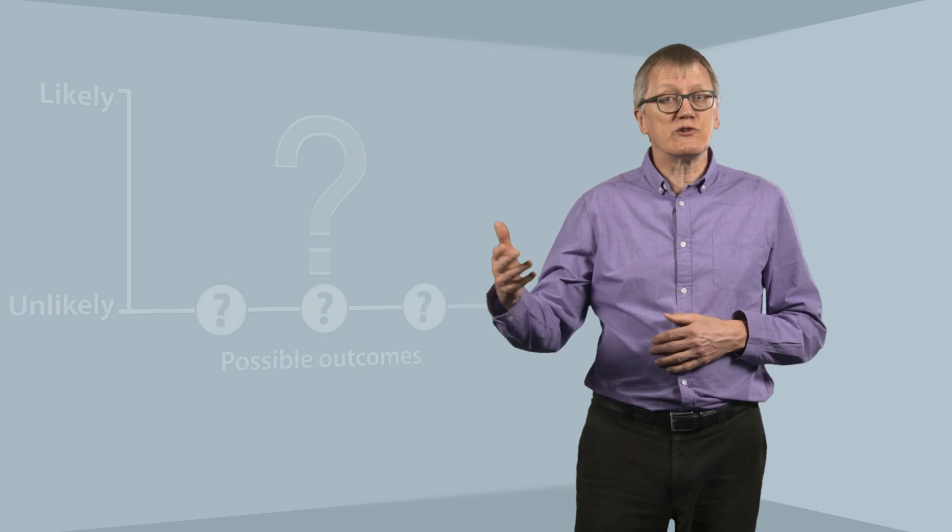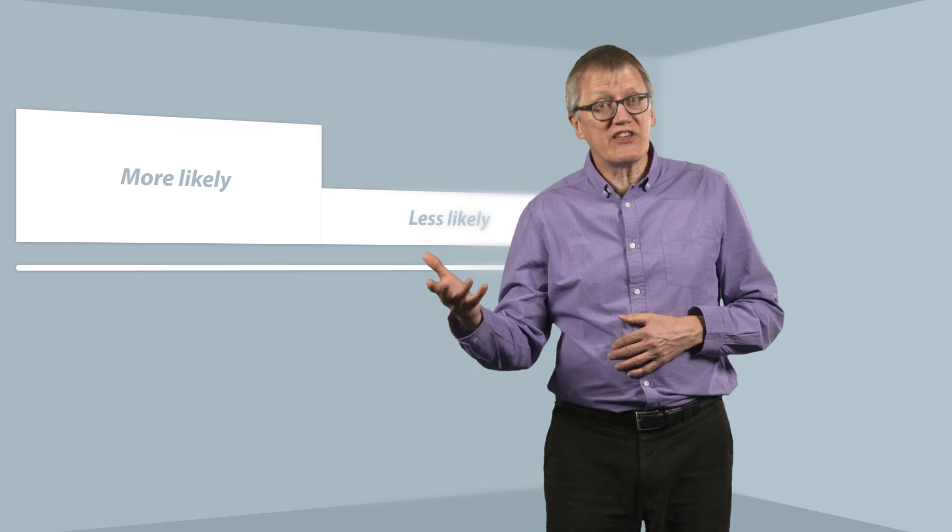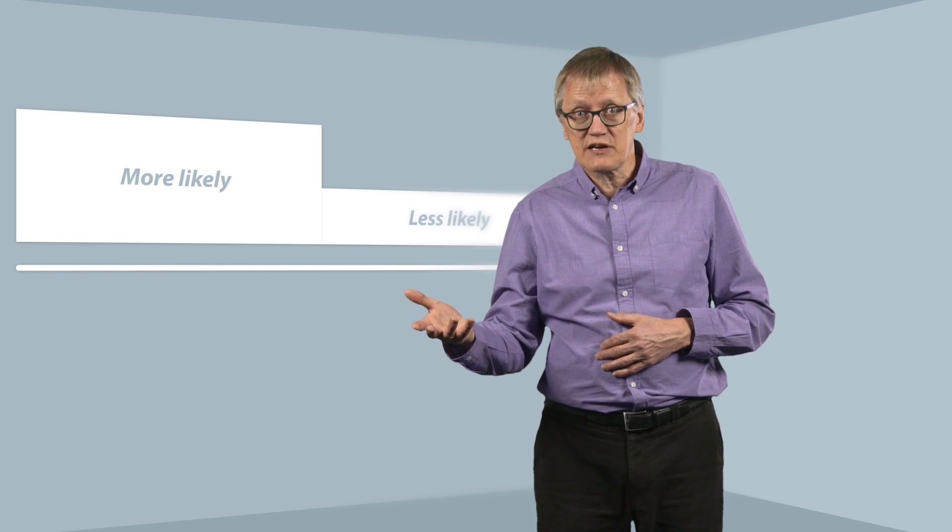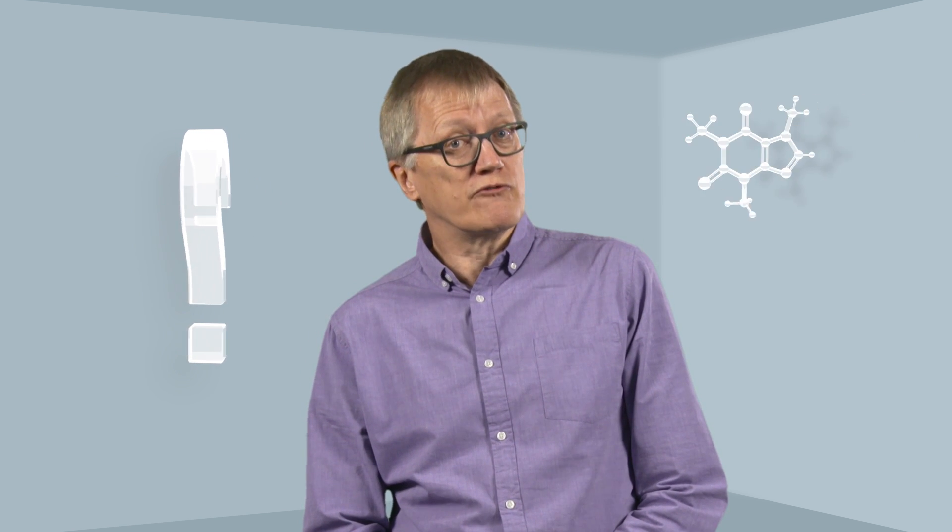So, when you see information on uncertainty, that isn't a failure of science. On the contrary, we need information on uncertainty. We can never be certain of the future, but if we take account of uncertainty, we can make better decisions, both in food safety and in everyday life.